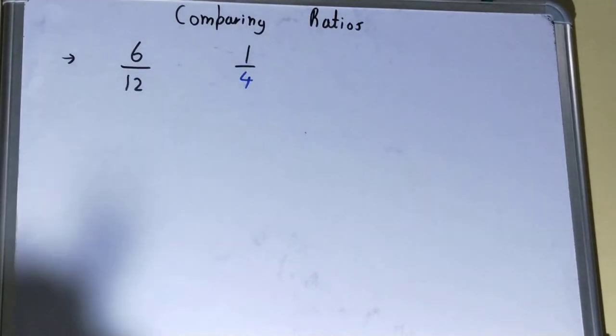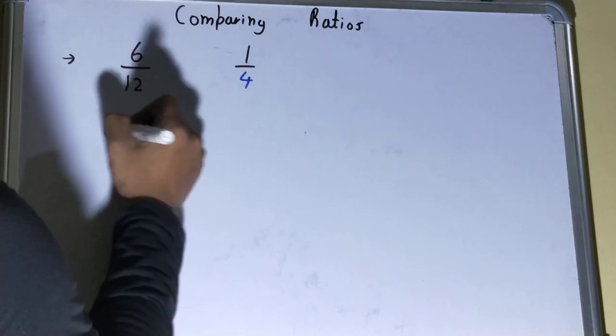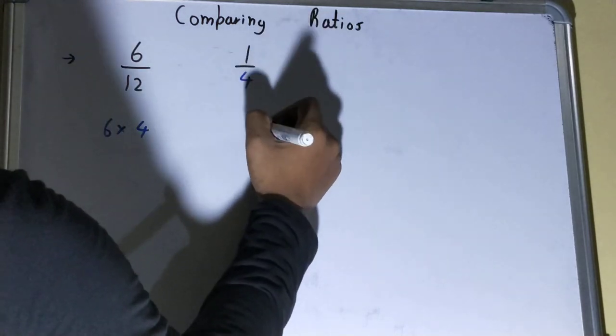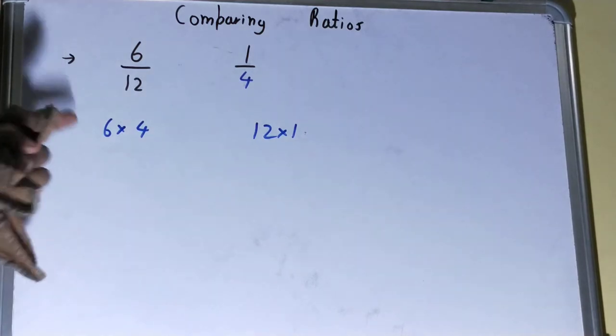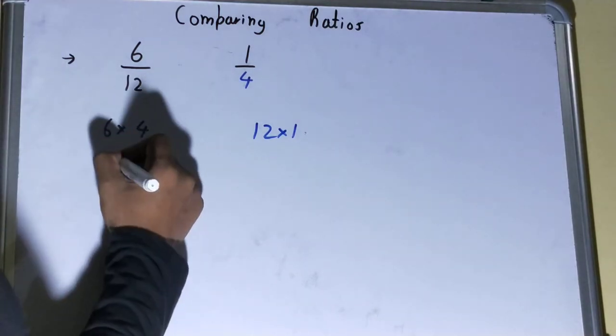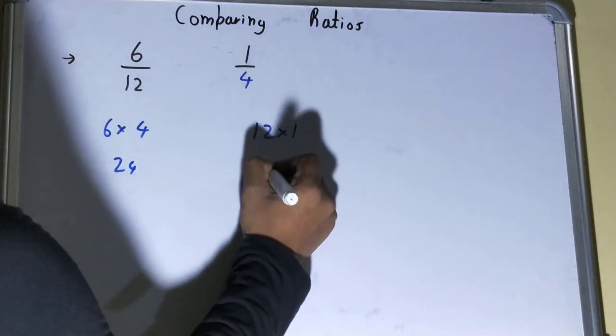Okay, again we can use the same technique of cross multiplying. So it will be 6 into 4 and this will be 12 into 1. All right, this 6 into 4 will give us 24, this 12 into 1 will give us 12.